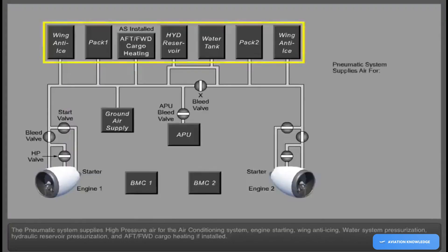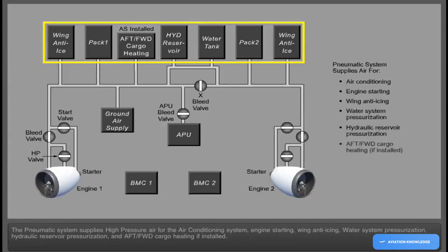The Pneumatic System supplies high-pressure air for the air conditioning system, engine starting, wing anti-icing, water system pressurization, hydraulic reservoir pressurization, and aft forward cargo heating if installed.